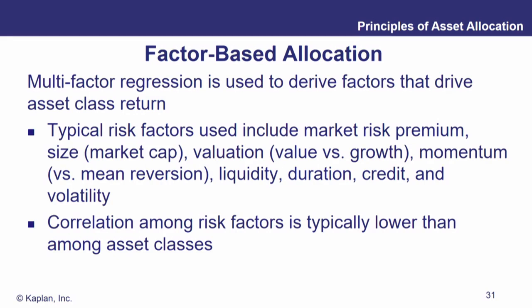The idea here is that each one of these factors captures ideally a unique slice of the risk puzzle. We're looking for correlation among these risk factors to actually be lower between the factors than we typically see with correlation between asset classes. Whenever we identify a new factor that does a good job explaining the cross-section of asset returns, its value is in the fact that it covers a piece of the risk puzzle that had not been covered before. So these are each unique, uncorrelated, independent risk factors.